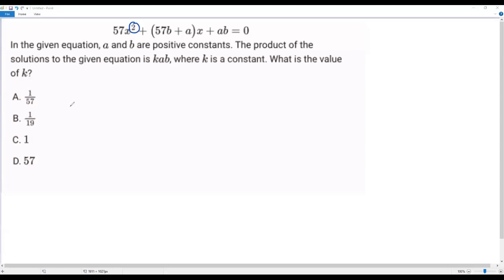So we'll have two solutions if we solve a quadratic equation, and the product of the solutions is given as k times ab, and we have to find the value of the constant k.